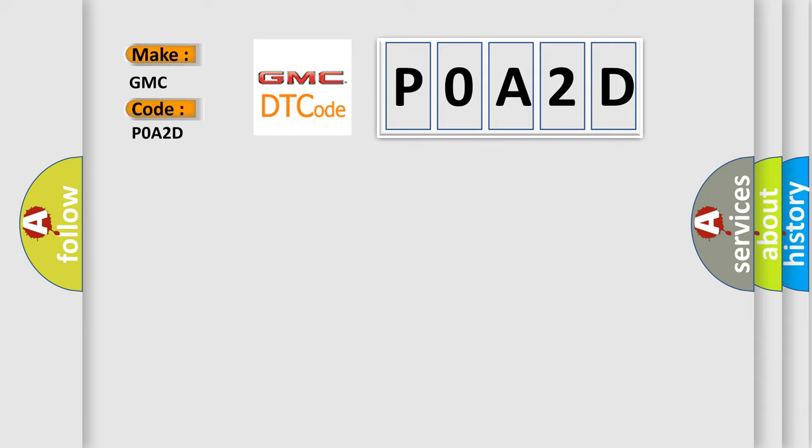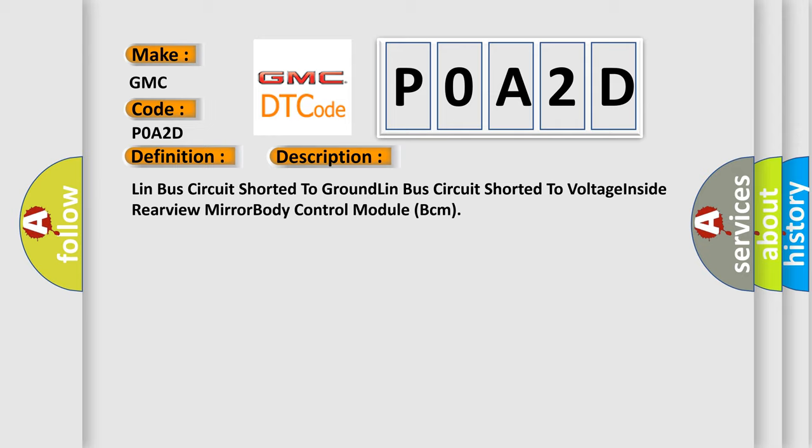The basic definition is LIN bus circuit shorted to ground, LIN bus circuit shorted to voltage, inside rearview mirror, body control module BCM.